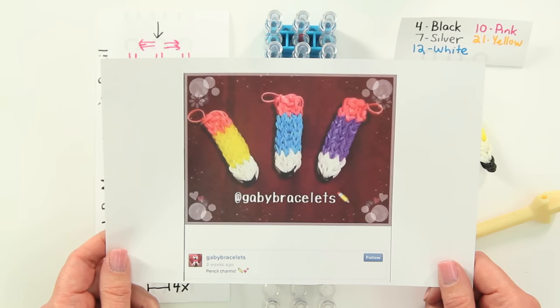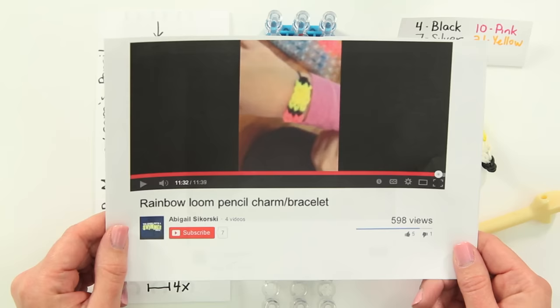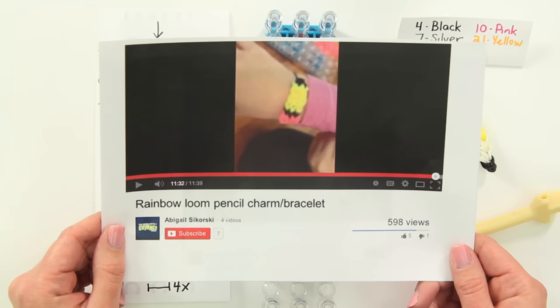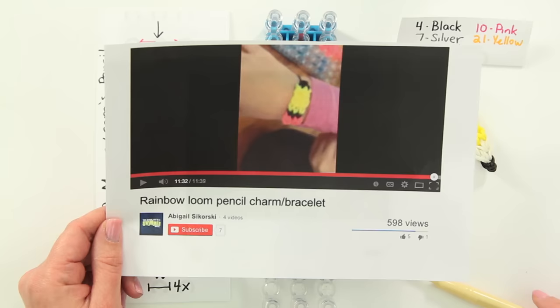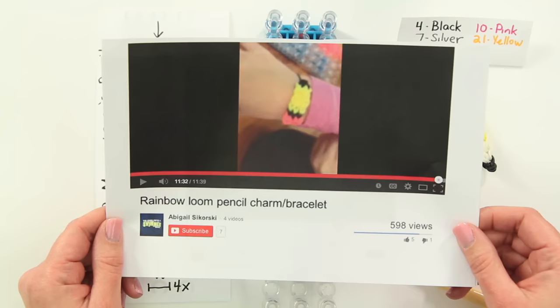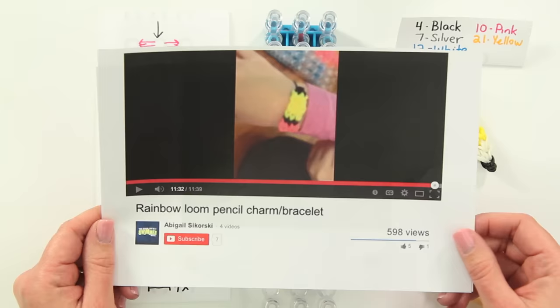She had gotten the idea from Abigail. So Abigail Sikorsky and her friend Anna had posted this video up on YouTube. I'll put the link below in the description so you could see how it started. She shows how to turn this pencil into a bracelet that goes all the way around. My design is slightly different, but there's no question that the path of inspiration goes from Abigail and Anna to Gabby and then to me. So, here is Made by Mommy's version of the pencil charm.